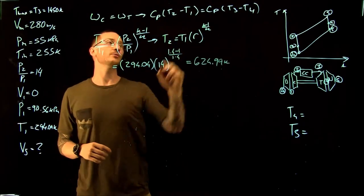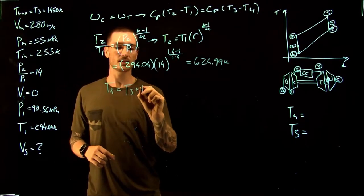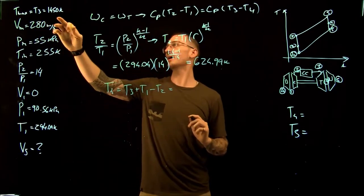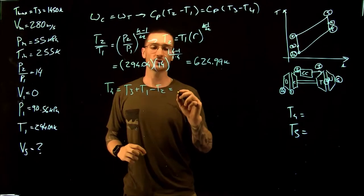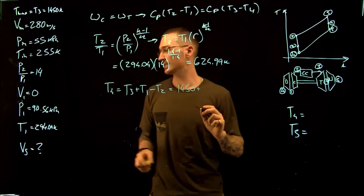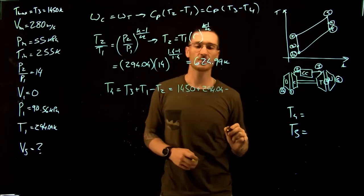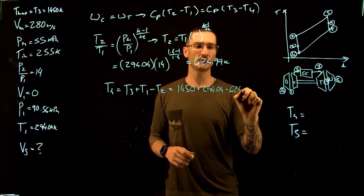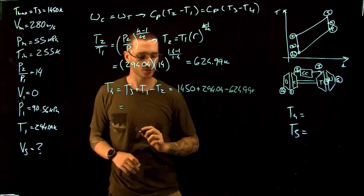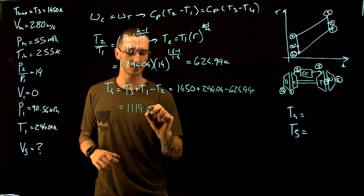With T2 known, we rearrange the work balance to get T4 = T3 + T1 − T2. T3 equals the maximum turbine inlet temperature of 1450 Kelvin. Substituting: T4 = 1450 + 294.04 − 624.99, giving T4 = 1119.05 Kelvin.